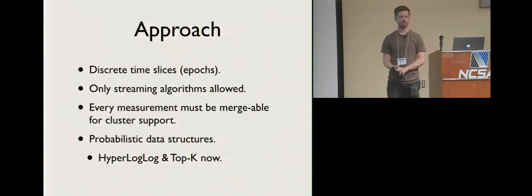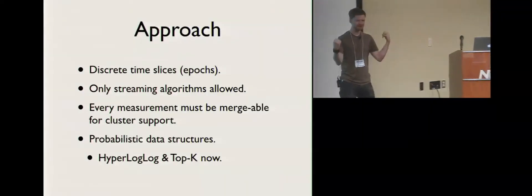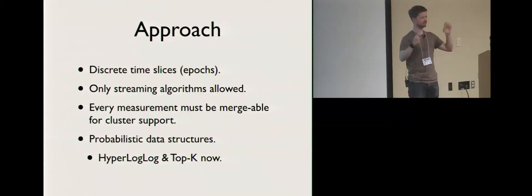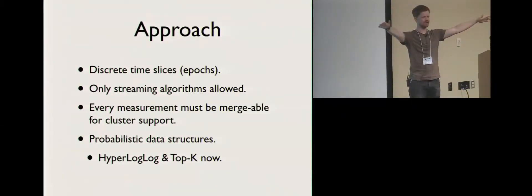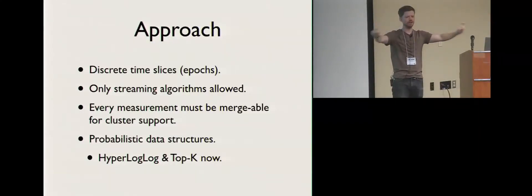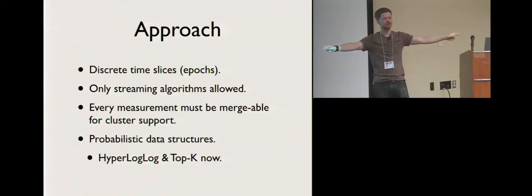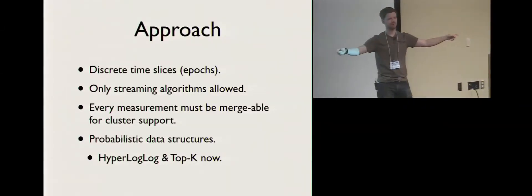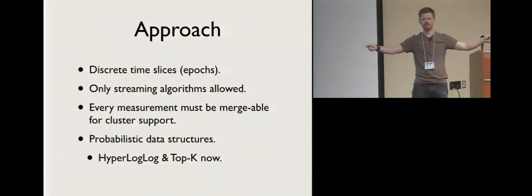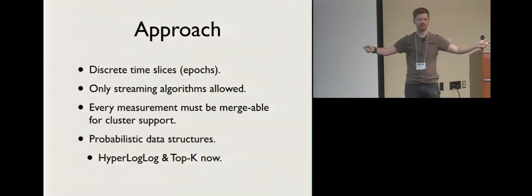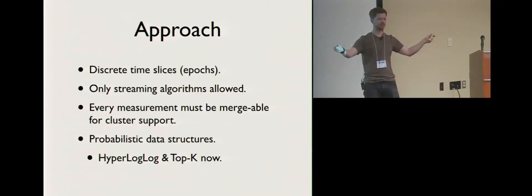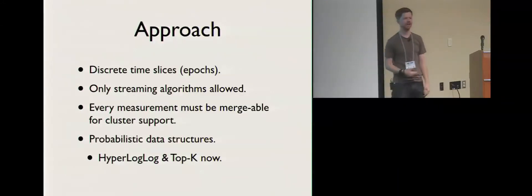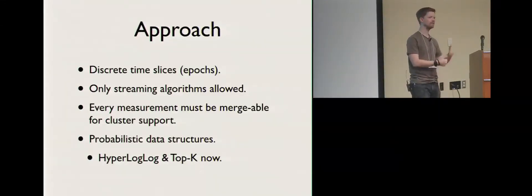All the measurements have to be mergeable — technically the word is composable. For load balancing you split your data stream, so you have a stream of numbers going to two different processes. You sum these numbers here and sum these numbers there. To compose those, you just add the two numbers — how hard is that? That same approach can actually apply to a lot of other algorithms — standard deviation, variance, all of these things have mechanisms to merge them.